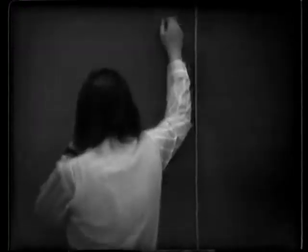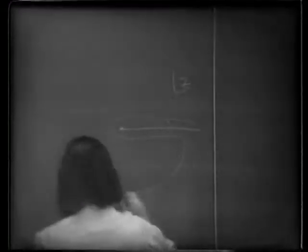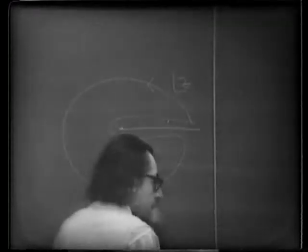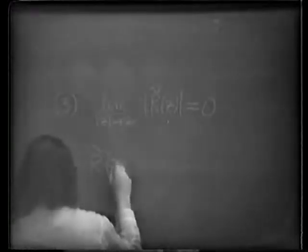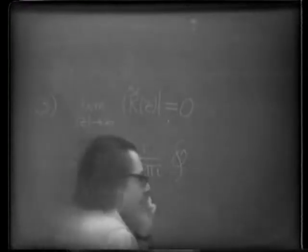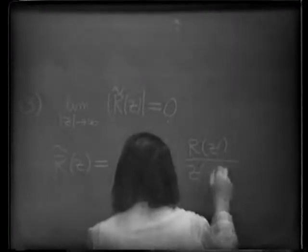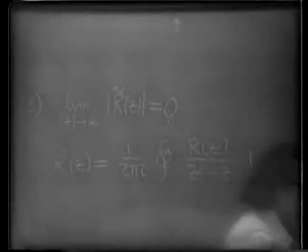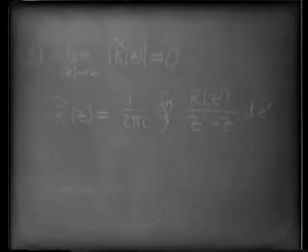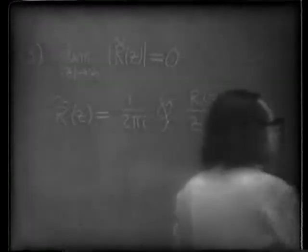The trick is to use Cauchy's theorem — Cauchy's integral formula — in the cut z-plane, drawing a contour like this. Cauchy's theorem tells us R-twiddle of z equals 1 over 2 pi i, integral along a closed contour, of R(z') over z'-minus-z, dz'. As I let the closed contour get bigger and bigger, I can neglect the boundary value on the big circle by this condition. That goes to zero. And I'm left simply with the boundary value along the cut.